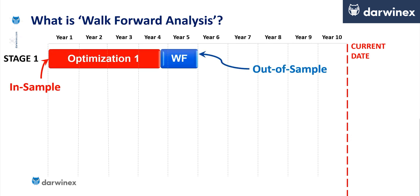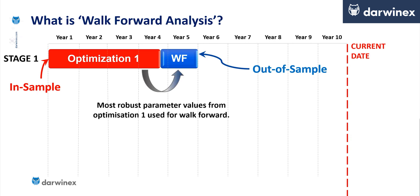In the first stage, this looks very similar and is very similar to the traditional approach. We have an optimisation phase using in-sample data and a walk-forward validation phase using out-of-sample data. And in an identical way, the most robust parameter values from the first optimisation are then passed into the walk-forward validation phase.